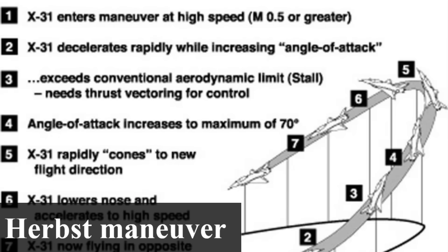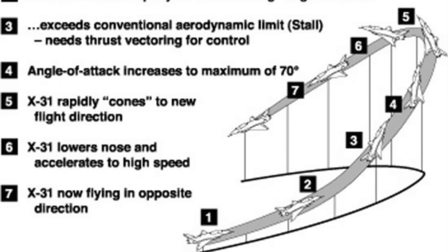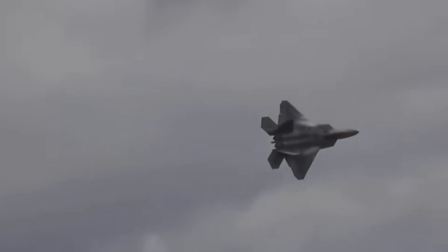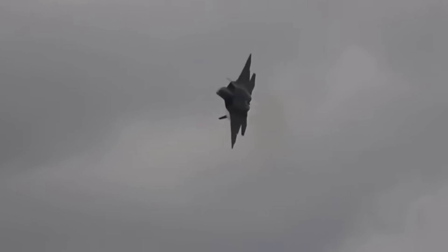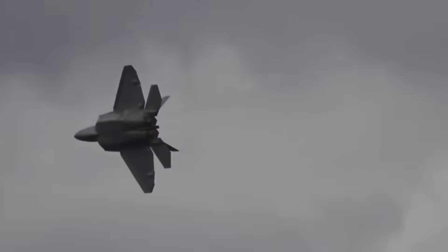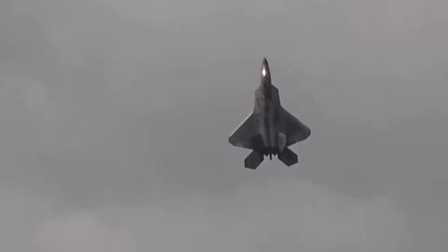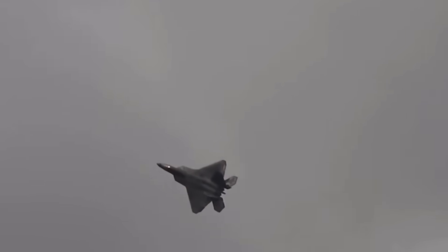Up next is the Herbst maneuver, also known as a J-turn, first performed by an X-31 on April 29, 1993. Dr. Wolfgang Herbst, a Messerschmitt-Bölkow-Blohm employee, provided the inspiration for the maneuver. It is basically Pugachev's Cobra with a twist — the pilot rolls the plane slightly while its nose is pointed at the sky, so that when the nose comes down, the plane is oriented in a different direction. Though categorized with Pugachev's Cobra, which is popular at air shows, the Herbst maneuver is considered more useful in combat.